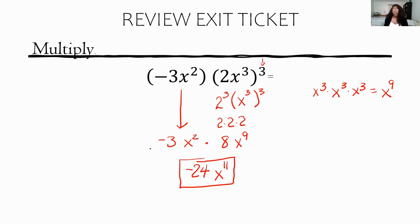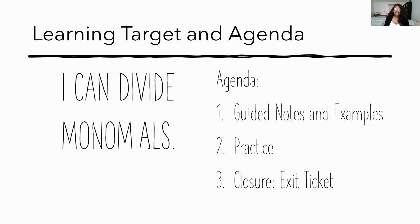Hopefully you got that one — if you did, high five! If you didn't, look at where you went wrong. For example, if you forgot to raise 2 to the third power, that's where you might have gotten negative 6 instead. Now that you see it, make that correction. Today's learning target, as promised: we are going to divide monomials.